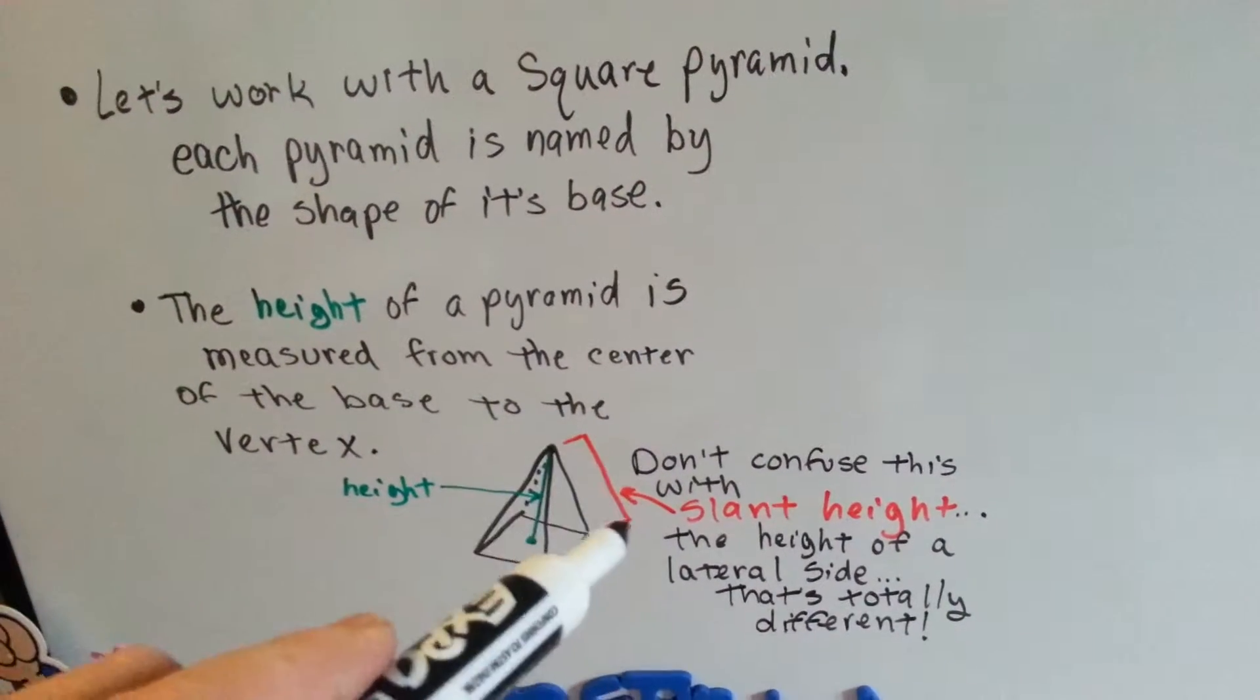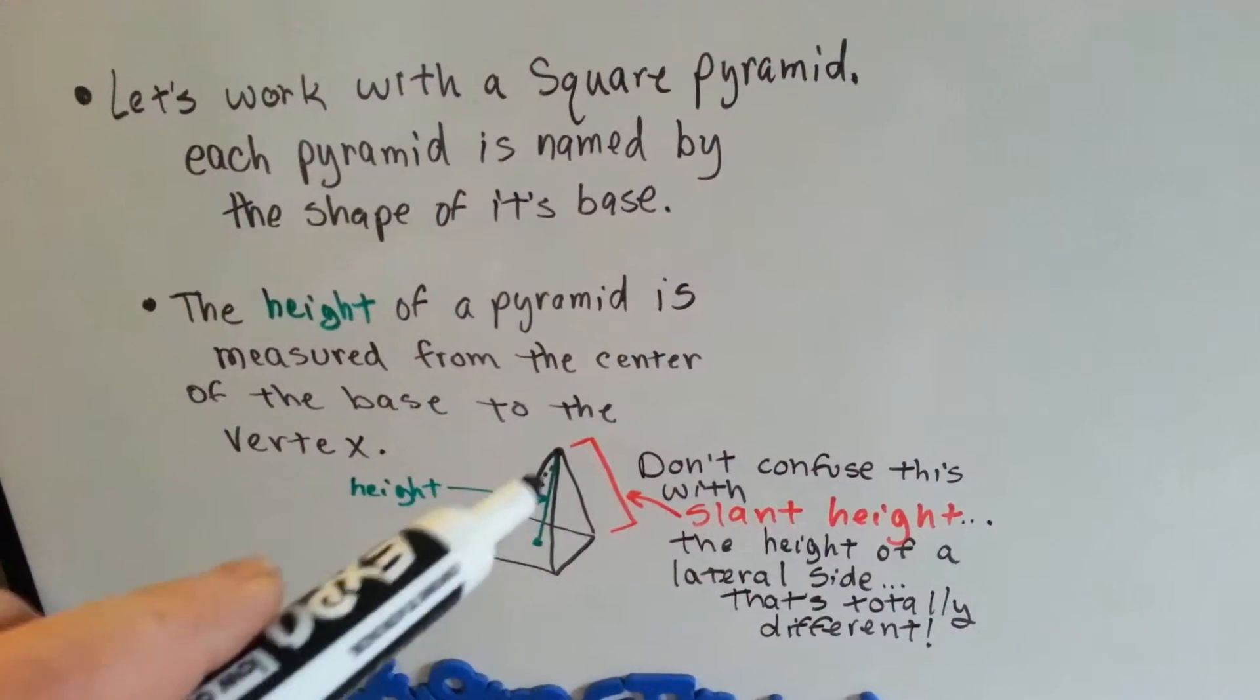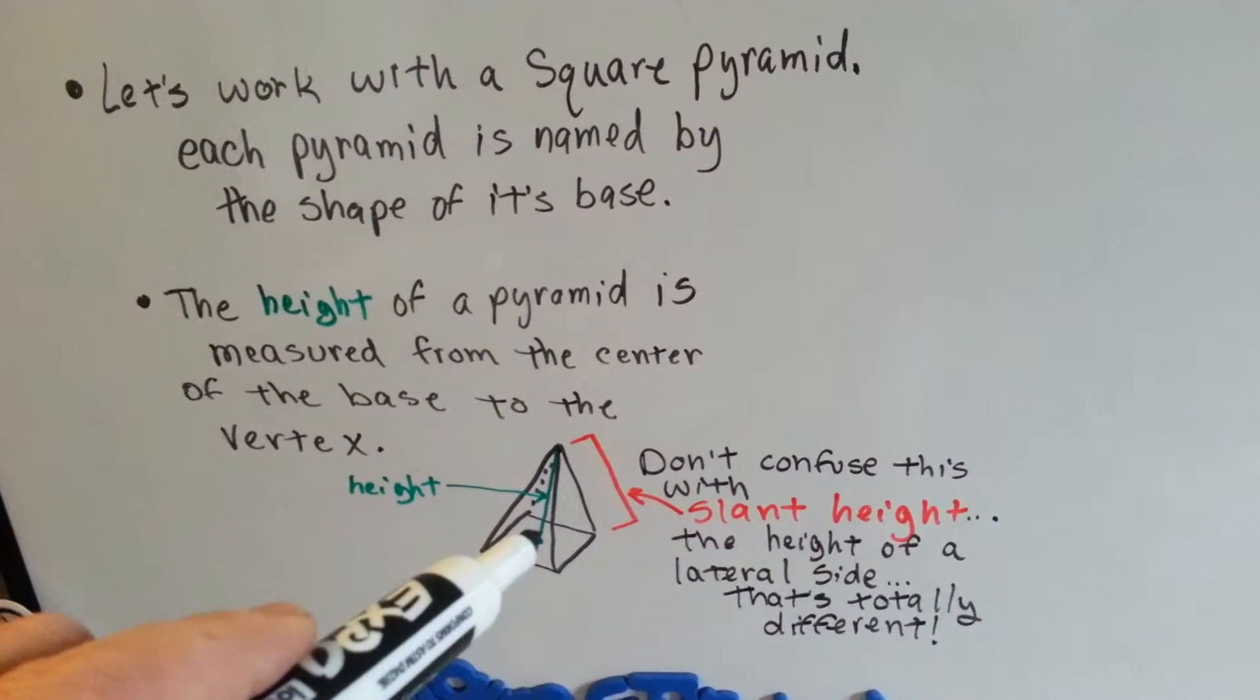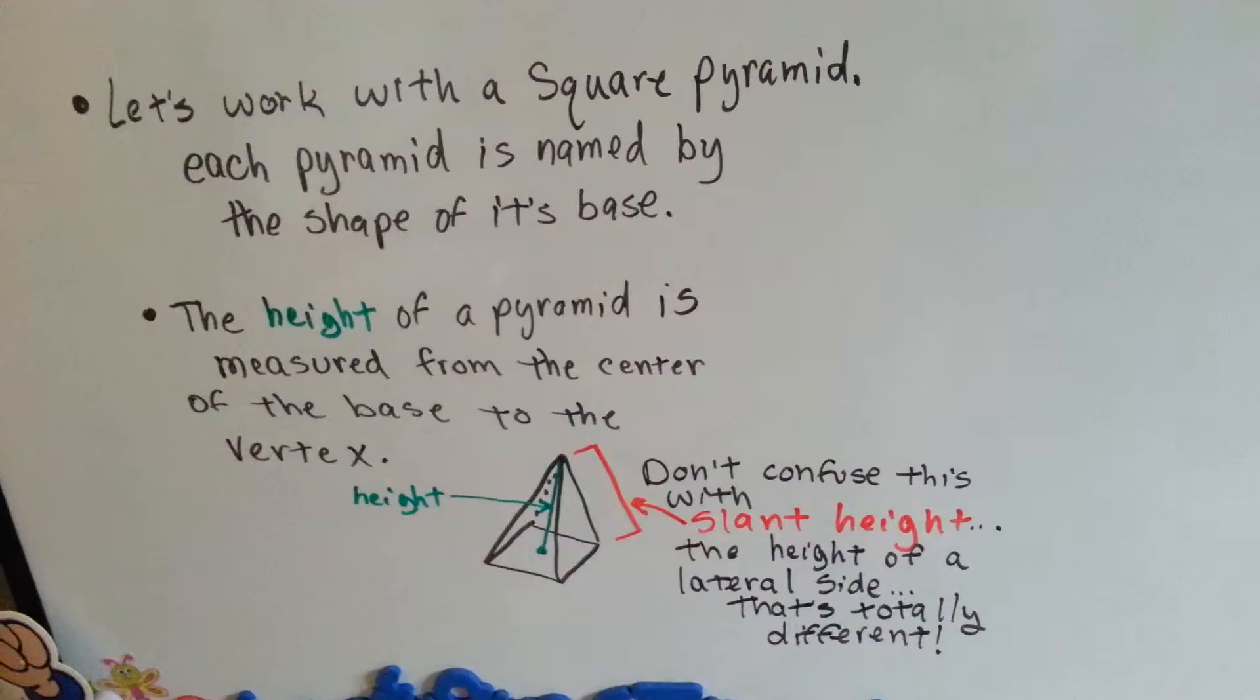If this is 8, then this is probably 8.2 or something like that. So we're dealing with this height, from the center of the polygon up to the vertex.